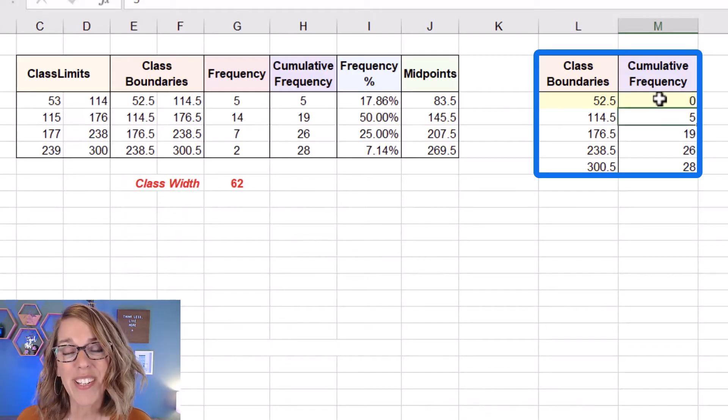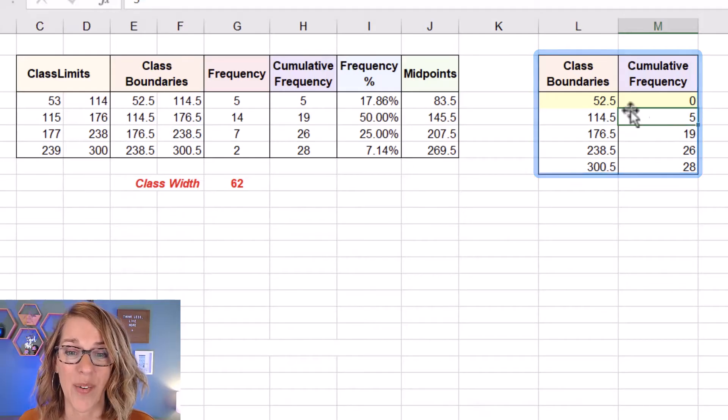So that cumulative frequency is my running total. We read this as up to, these are college credits, college credits of 52.5. I've got zero students up to 114.5 college credits. I've got five students. I'm adding 14 more to that up to 176.5. I have a total of 19 and so on.